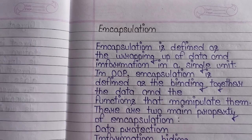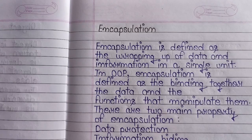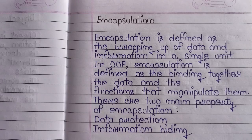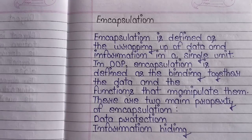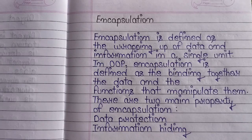किसी भी class में हमारे पास data और function होते हैं, और अगर ये data और function हम किसी भी class में लिख देते हैं, तो वो encapsulation होता है — for example, class. Encapsulation हमें method provide करता है जिससे हम अपने data को control कर सकें, ताकि बाहर से कोई भी external object internal data को modify न कर सके. Encapsulation की दो main property होती हैं: first है data protection, second है information hiding.